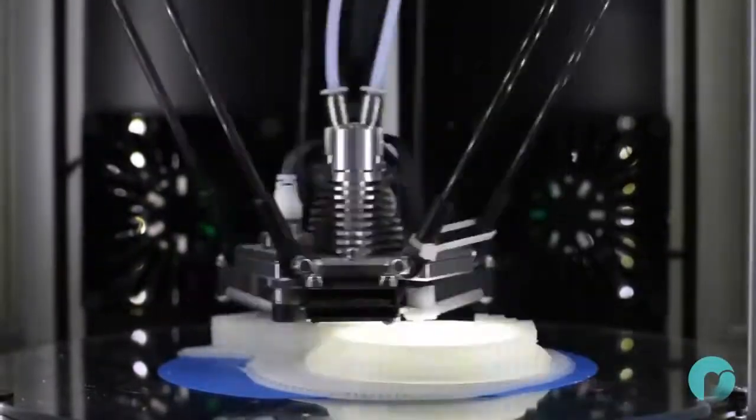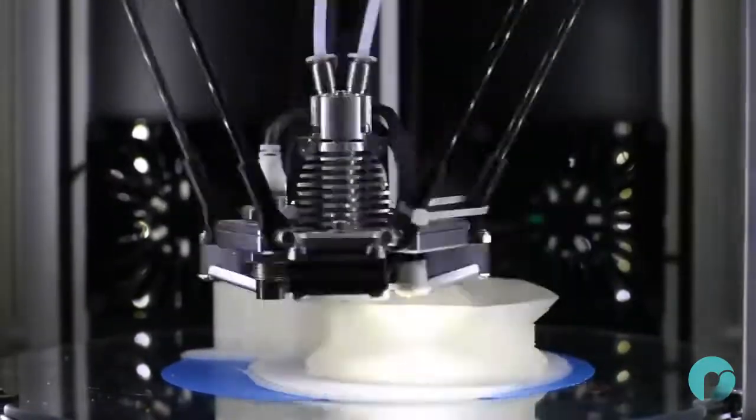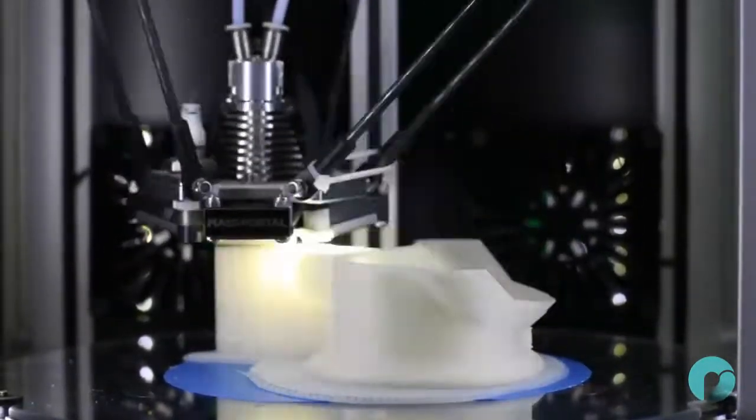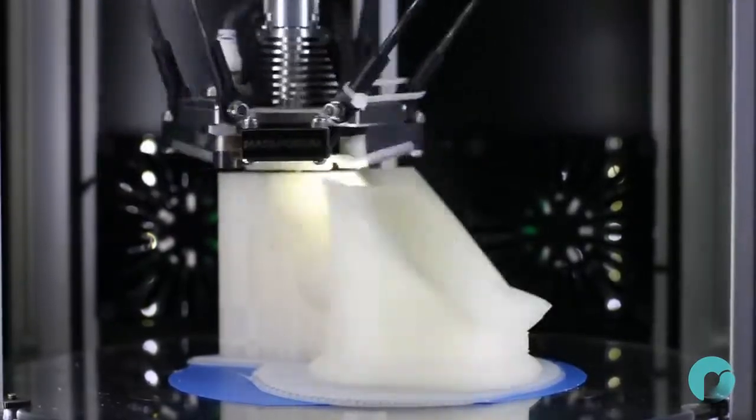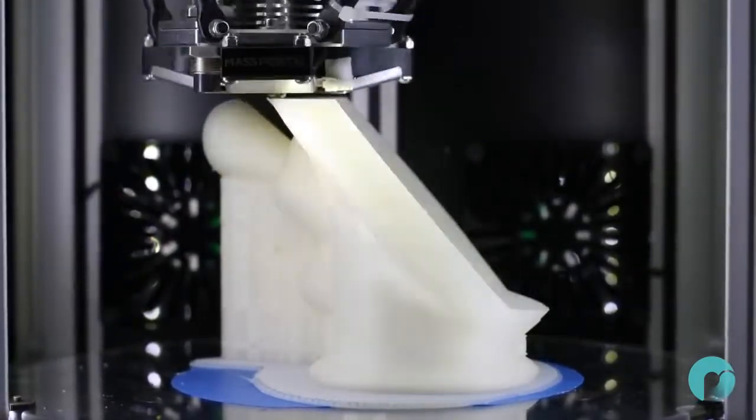Polycast is a new filament specially developed for the casting industry. Polycast has excellent printing characteristics and features balanced mechanical properties, with no warping or heated bed required.